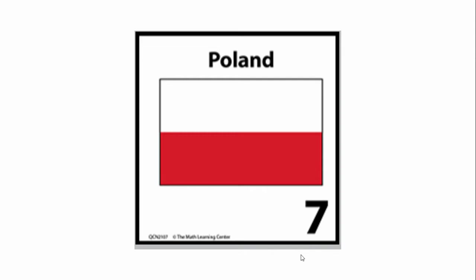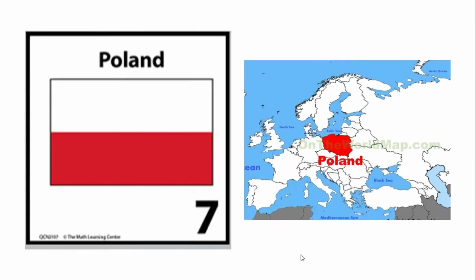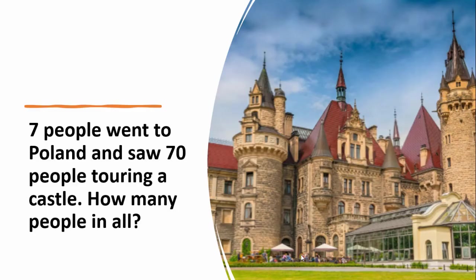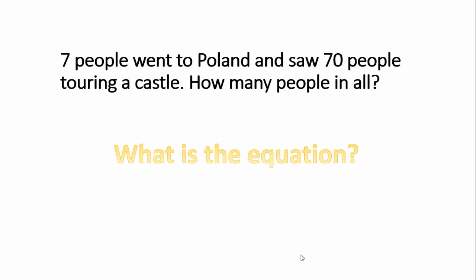Here's the marker that we missed for Sunday. Pause the video and discuss with your learning coach your observations. Here's a look at our calendar marker next to the map of Poland. Here's the story problem: seven people went to Poland and saw 70 people touring a castle. How many people in all? What exactly is the question asking us? It's asking how many people in all.